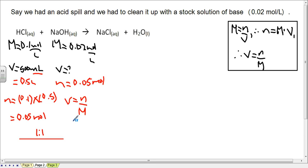and I can take my number of moles, 0.05 moles, and divide that by my concentration, 0.02 moles per liter, and I get an answer of 2.5 liters.